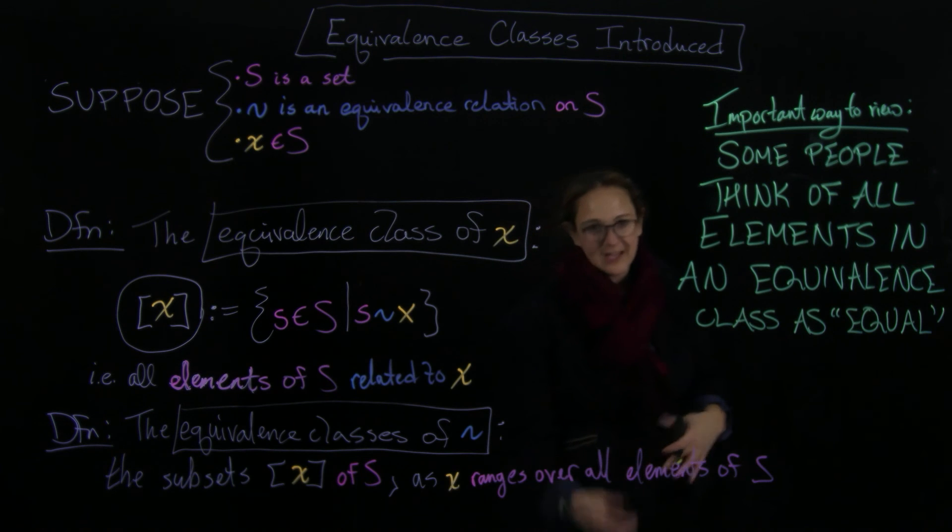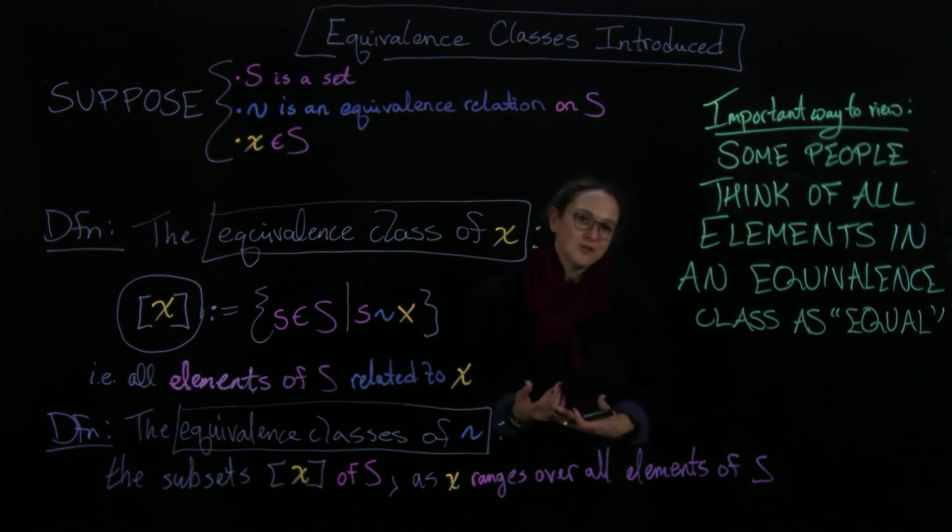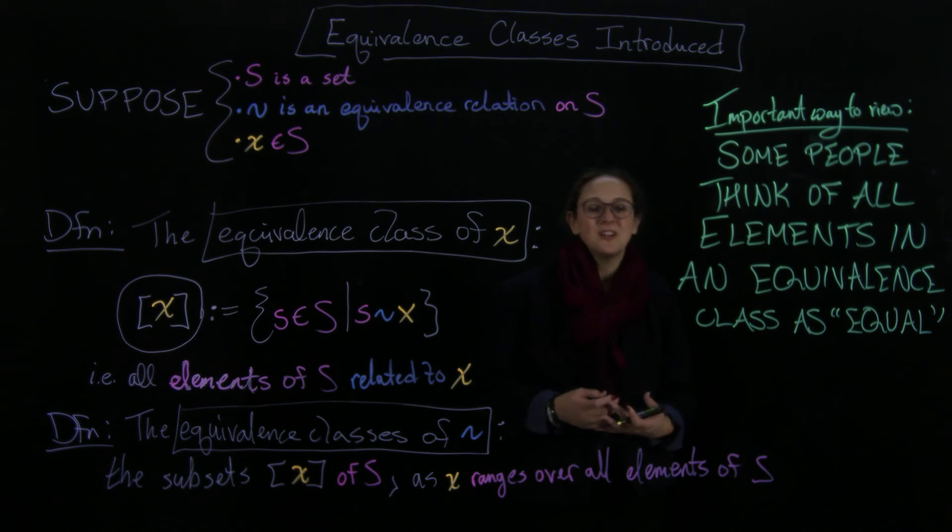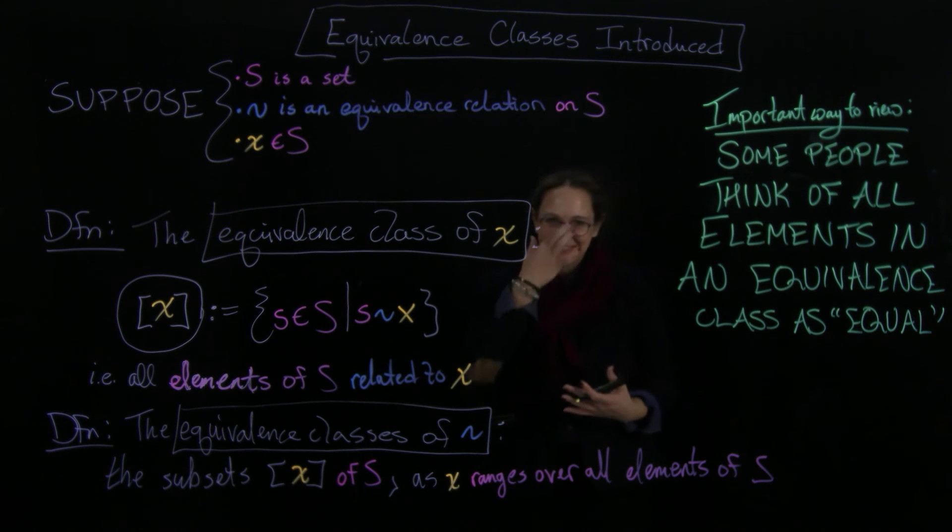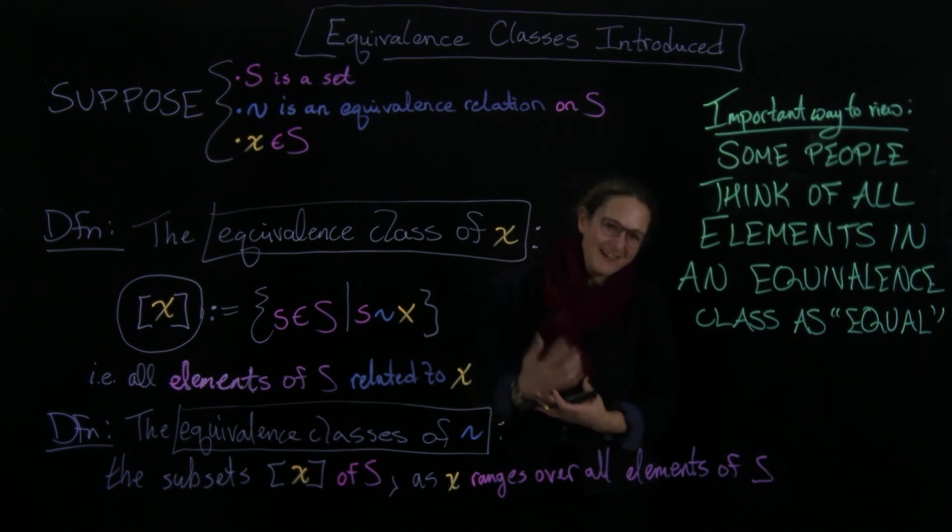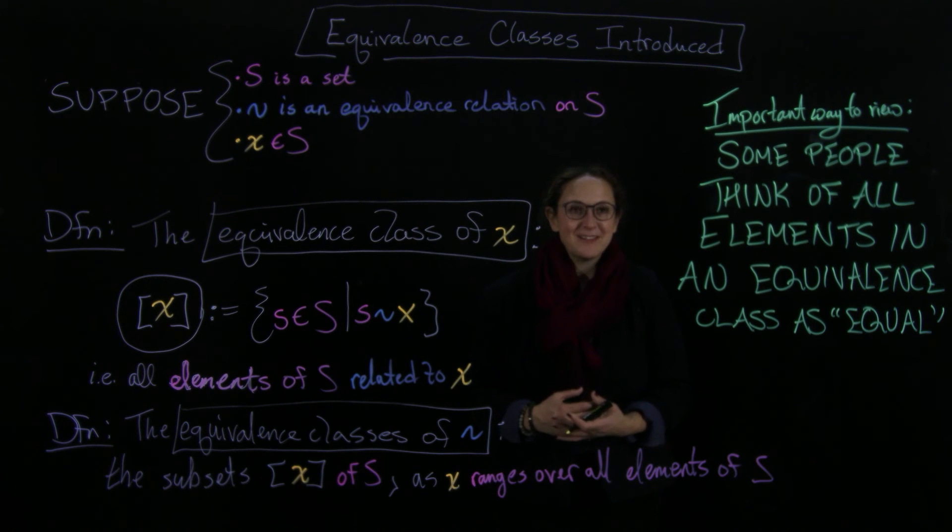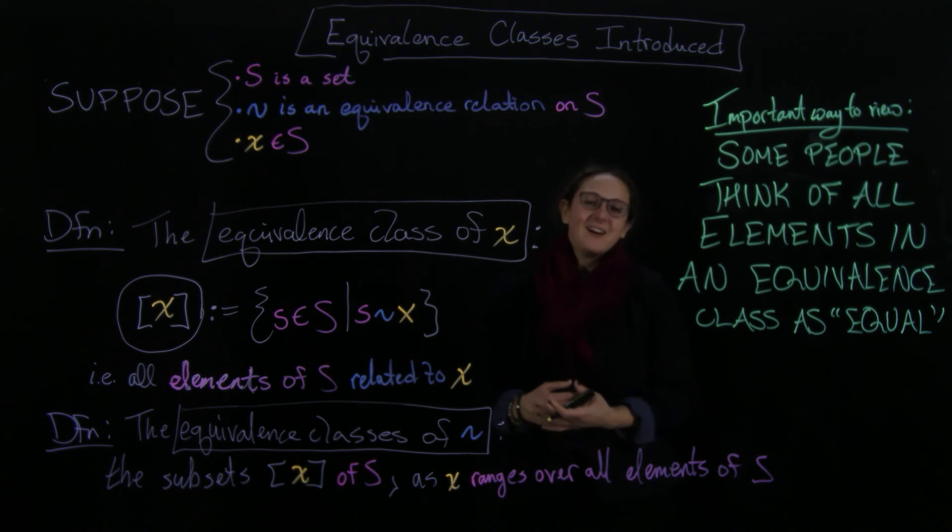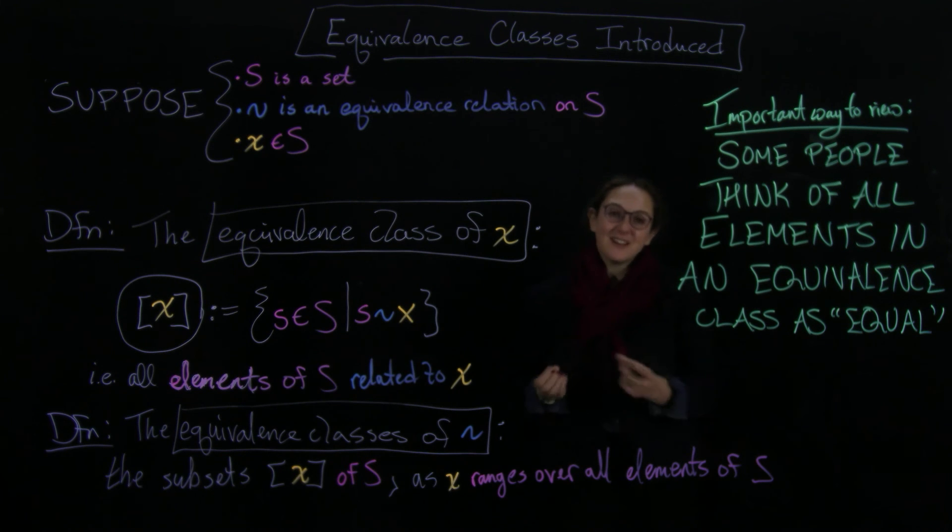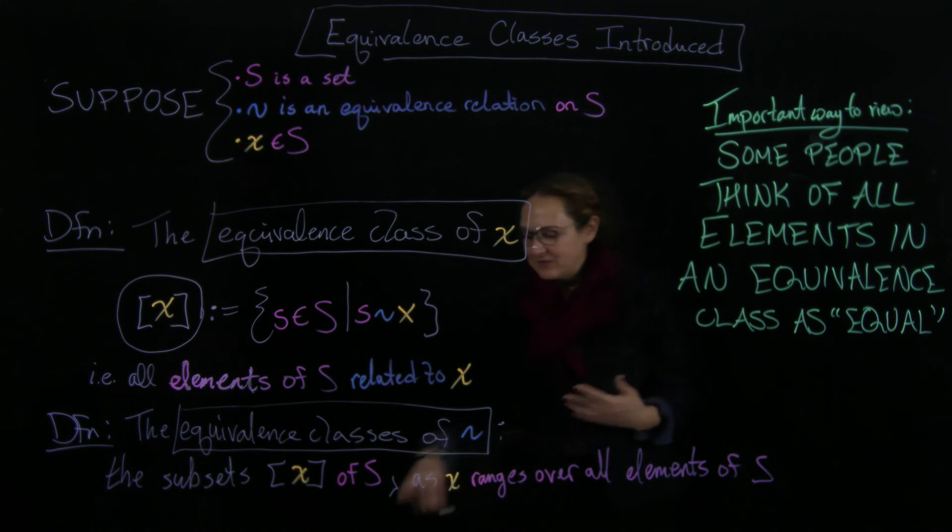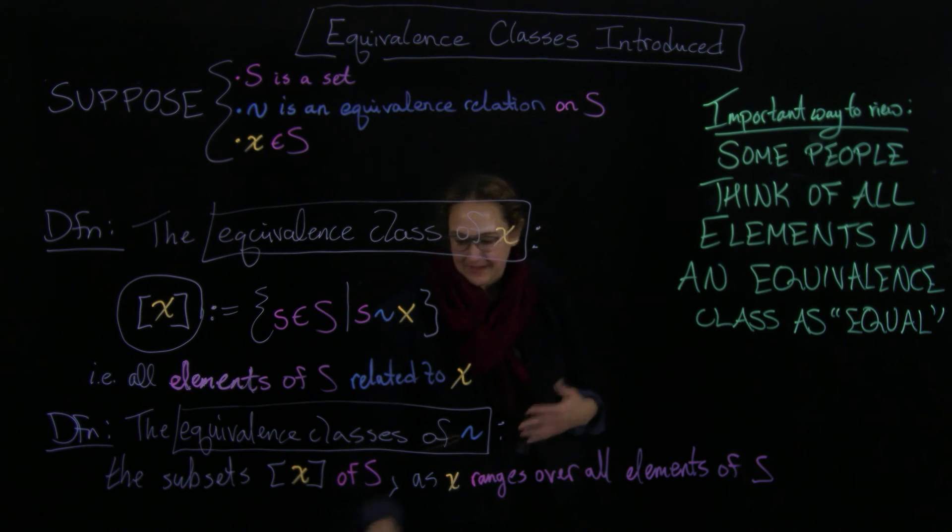You might think of all the even integers are equivalent in the sense of being congruent mod 2. All the odd integers are equivalent in the sense of being congruent mod 2. And in some context, that means you actually want to consider them to be the same thing. Okay? And we'll get into a lot more examples of this.